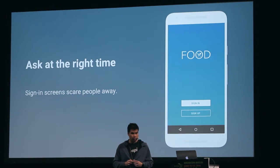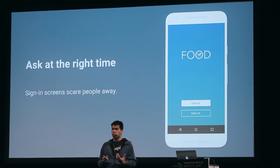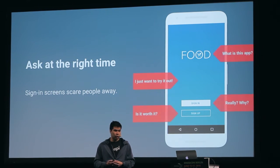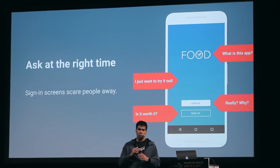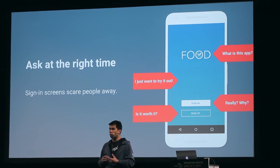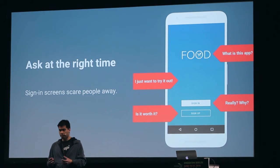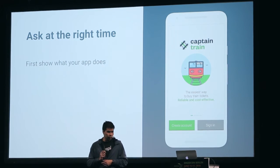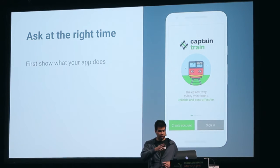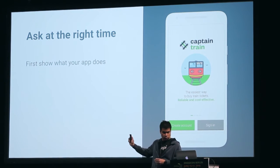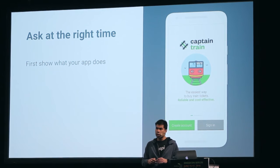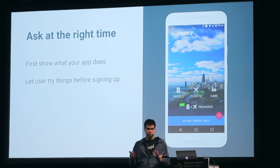The first, almost common-sense principle is asking at the right time. When someone opens a new app and sees the first screen, they're always wondering: what is this about? What do I get out of providing information to sign in or sign up? One example is Captain Train from France — developers who work closely with Google. They've added a little description of what their app does alongside the standard sign-in options. That doesn't even take that much work.